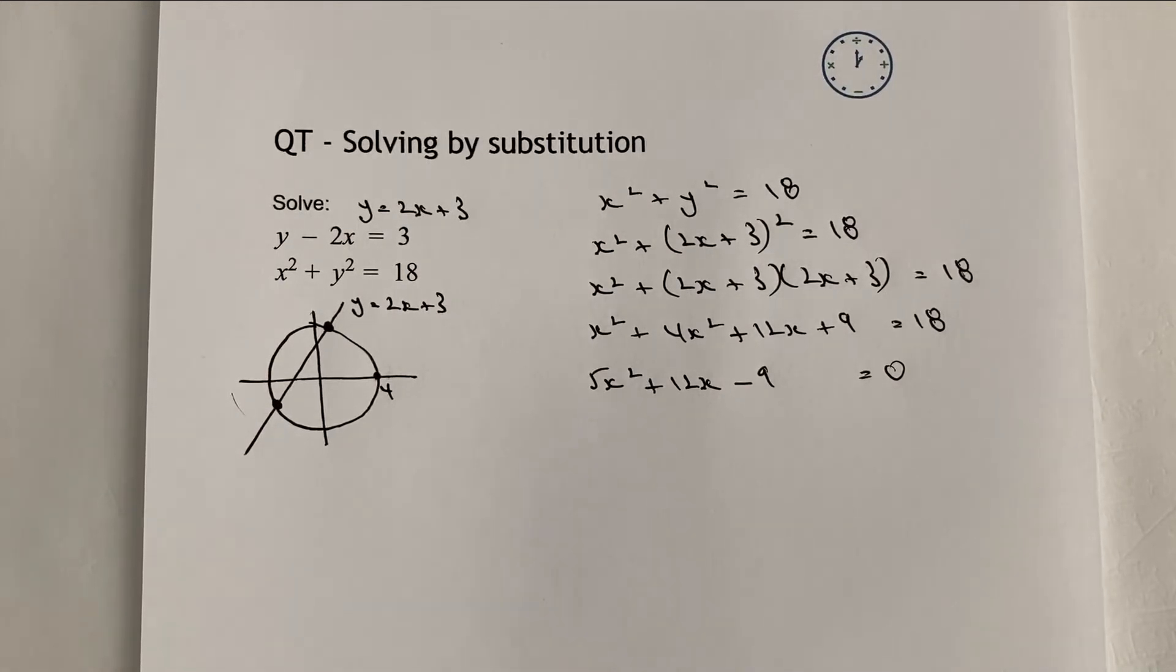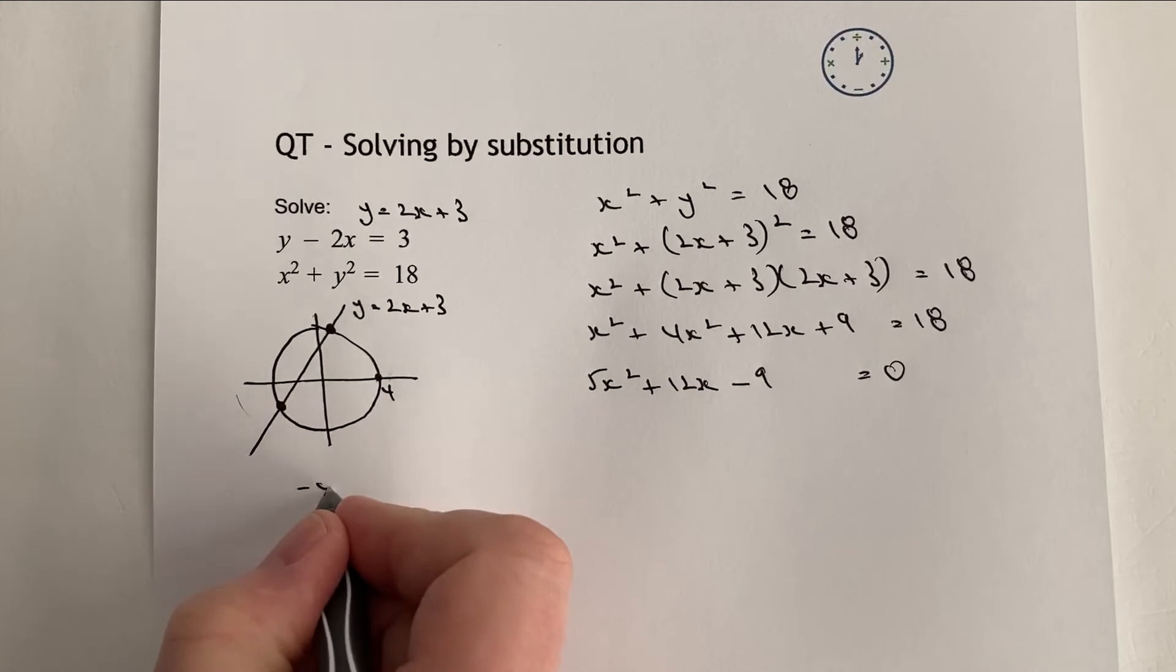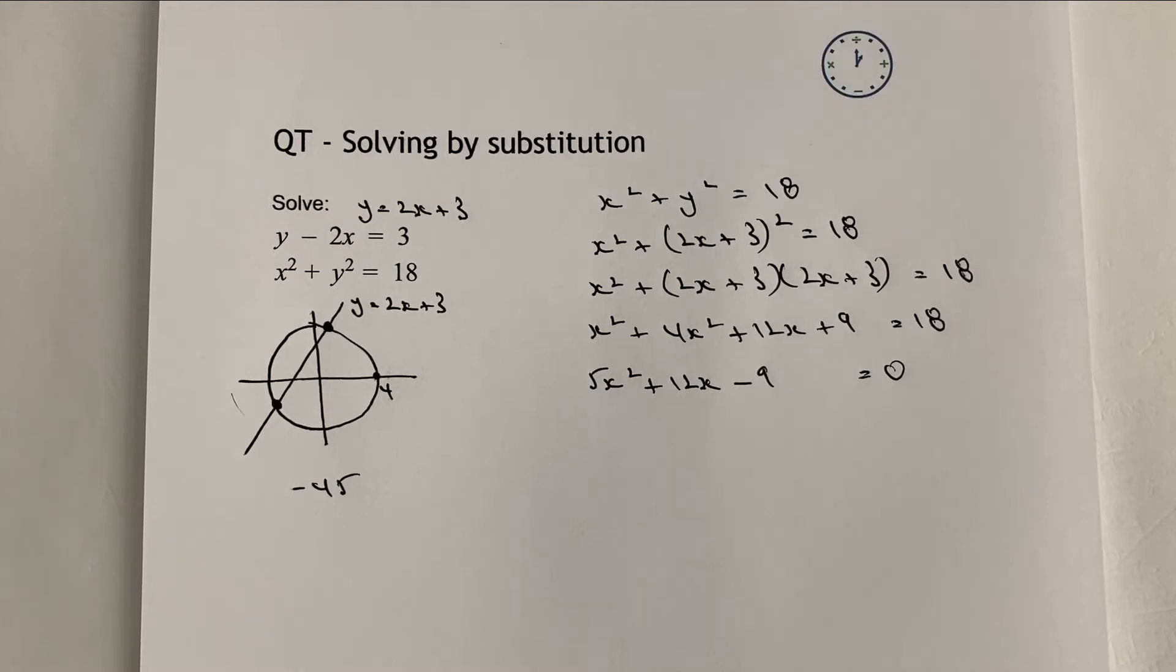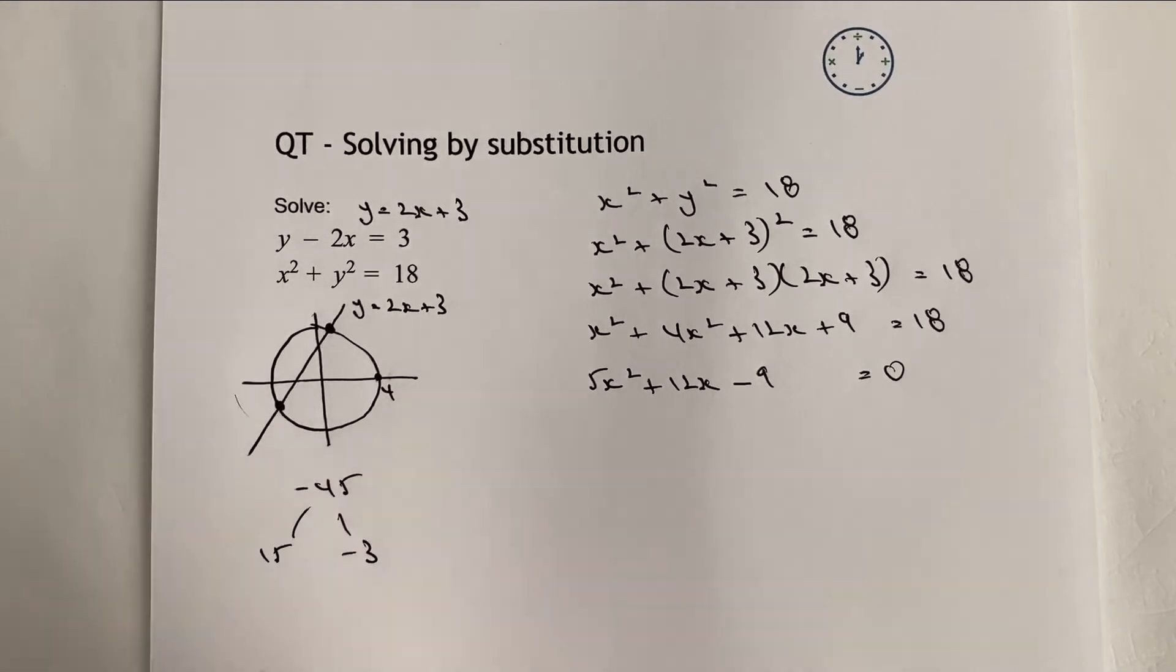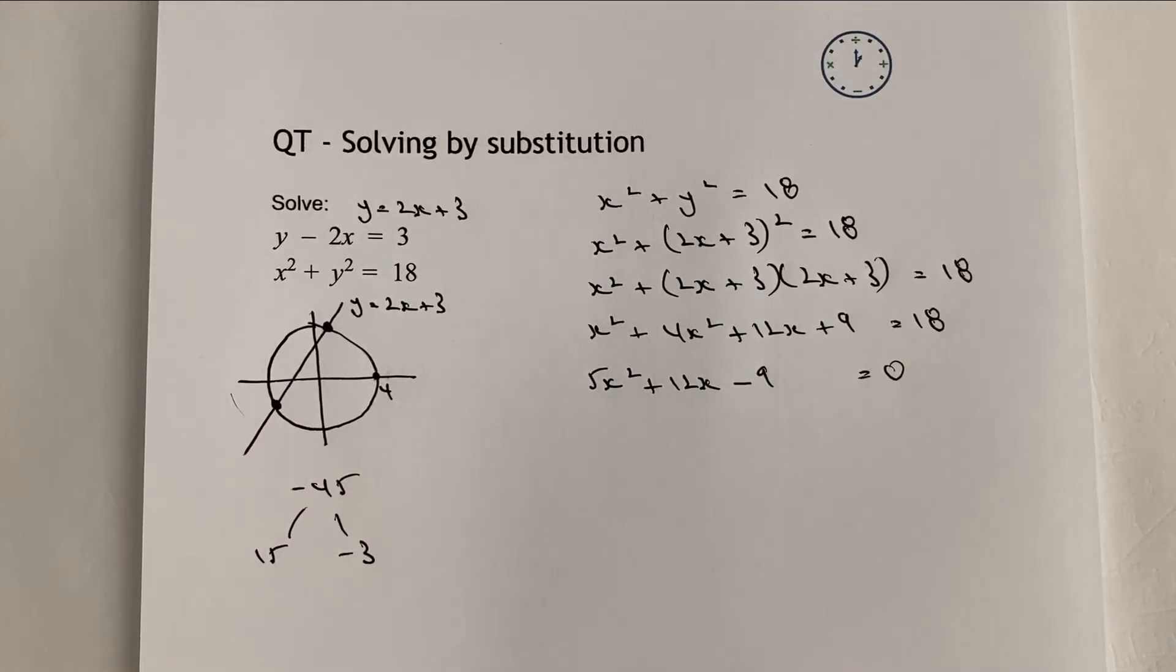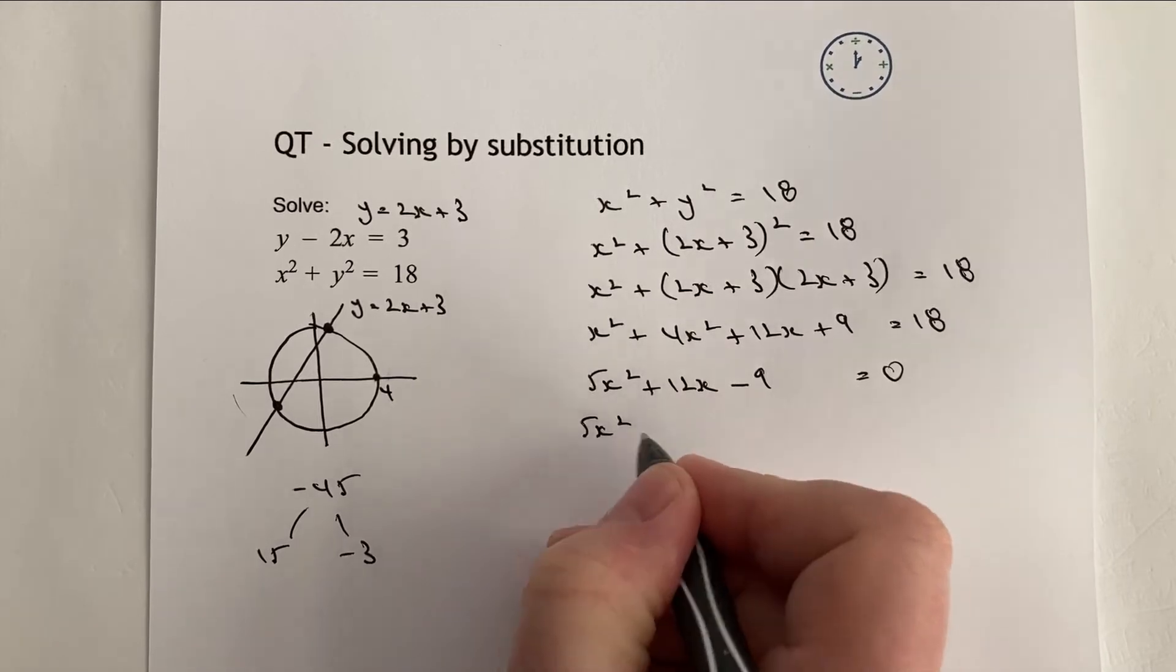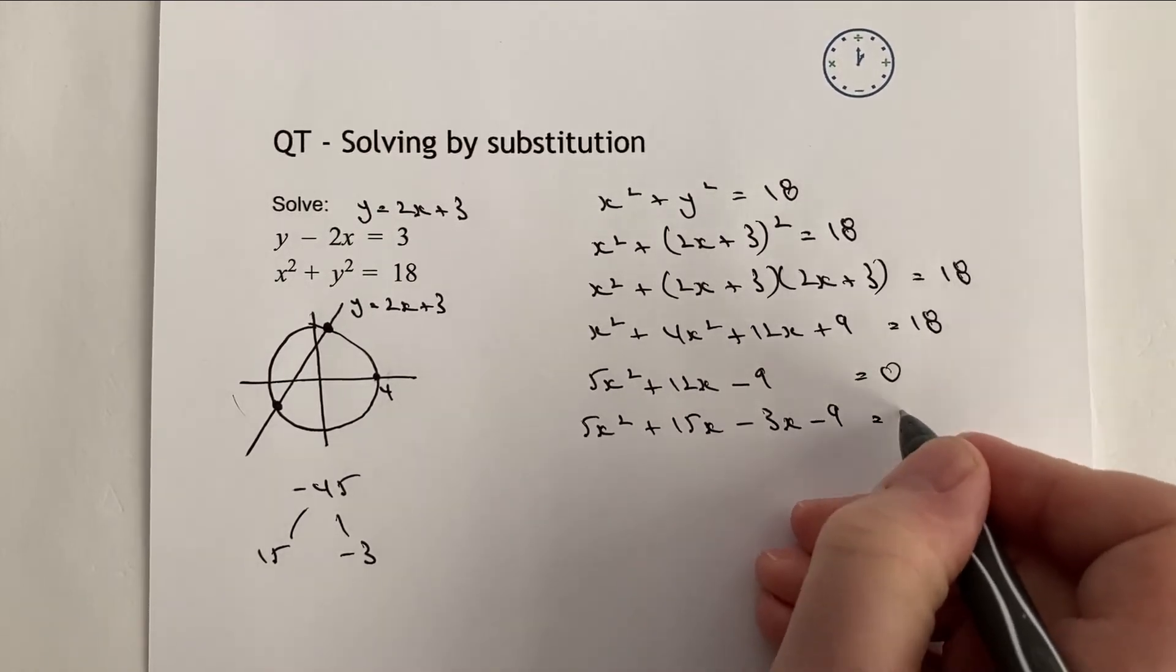Now, there are a couple of different techniques. The one I'm going to use is I'm going to say, actually, 5 times minus 9 is minus 45. So I want two numbers that when I multiply them together make minus 45 and when I add them together make plus 12. So those two numbers are going to be 15 and minus 3. Now, you might do this slightly differently to me. This is the way I learn how to do it. It's the way I prefer. It kind of makes sense in my own head. But what I would do is I would then write this out slightly differently as 5x squared plus 15x minus 3x minus 9 equals 0.